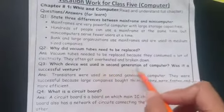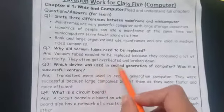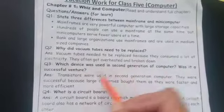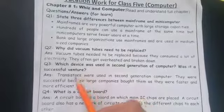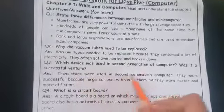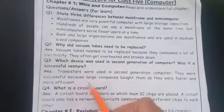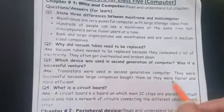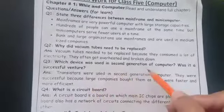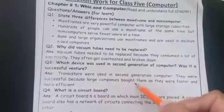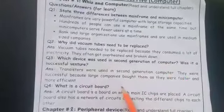Which device was used in the second generation of computers, and was it a successful venture? In the second generation, transistors were used. These were successful because large companies bought them as they were faster and more efficient.